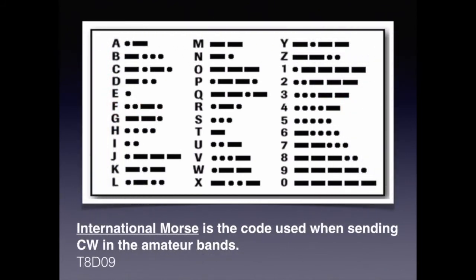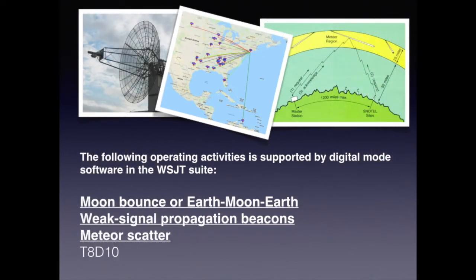It can be argued that Morse code is a type of digital mode because it tends to be binary — a signal that's either on or off, though the length of time it's on or off conveys its meaning. For the exam, know that International Morse is the code used when sending CW on amateur bands. Other fascinating digital modes include Earth-Moon-Earth bounce, where you bounce a signal off the moon; weak signal propagation beacons sending a hundredth of a watt to test propagation distance; and meteor scatter, which bounces off the ionosphere. For the exam, know that all of these are activities supported by digital modes.